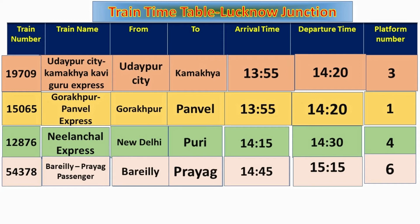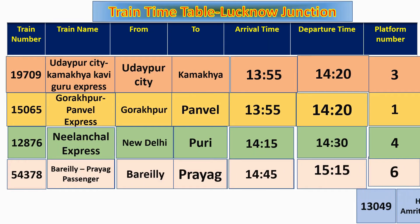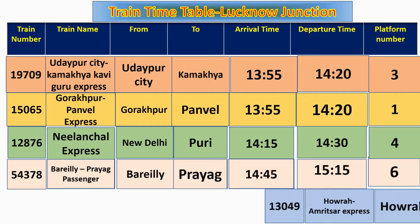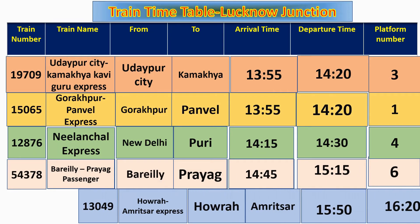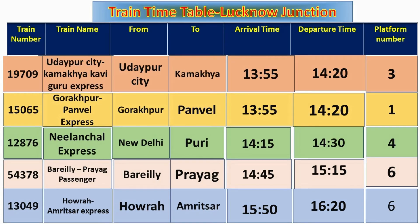Train number 13304/13049, Howrah Amritsar Express, from Howrah to Amritsar, will arrive at 15:50 at platform number 6. Its departure time is 16:20.